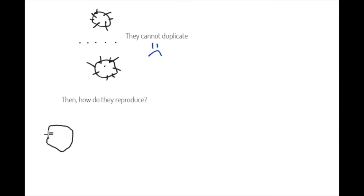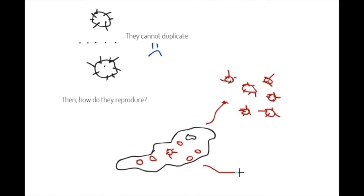Let's have a look at this virus. If it wants to duplicate, it will need to find a cell, like this one here. Then the virus will enter the cell. And once it is inside, it can start reproducing and making new viruses inside of the cell. Once the cell is full of viruses, these viruses will leave. And after the cell will probably die.